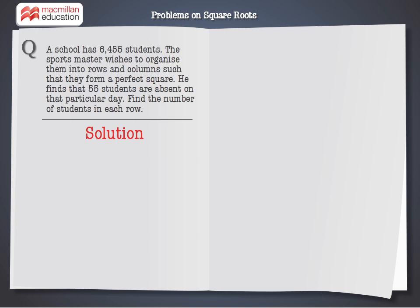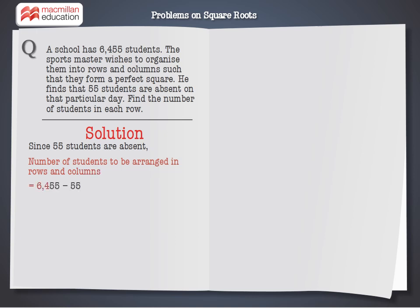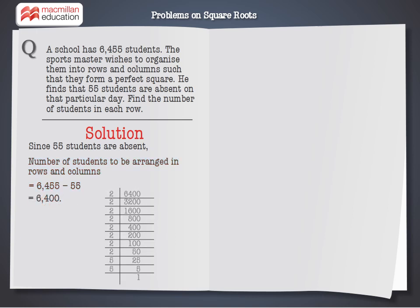This question deals with the square root of a perfect square. On reading this question carefully, we find that 55 students are absent on that particular day. The number of students to be arranged into rows and columns is 6,455 minus 55, which is equal to 6,400.